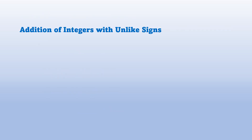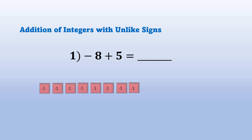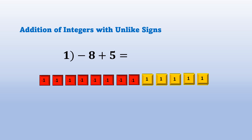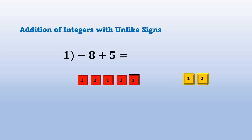Addition of integers with unlike signs. Example number 1: negative 8 plus 5 equals blank. We have 8 red tiles to represent negative 8 and 5 yellow tiles to represent positive 5. To add integers with unlike signs, we take away by pair the red tile and the yellow tile — 1, 2, 3, 4, 5. What is left? We have 3 red tiles. So, negative 8 plus positive 5 is equal to negative 3.